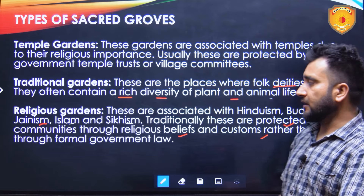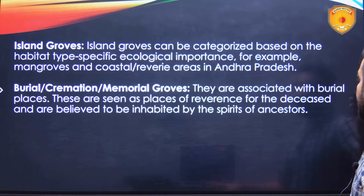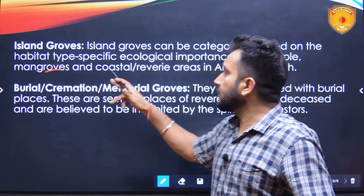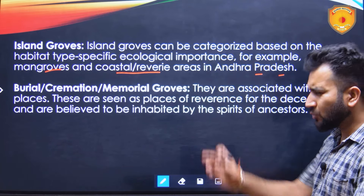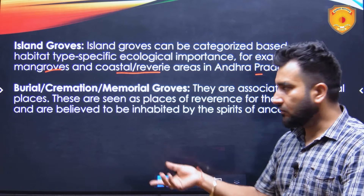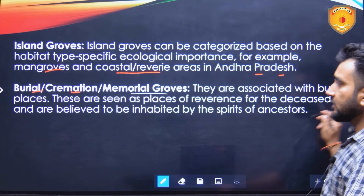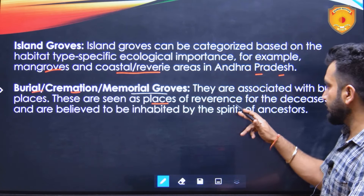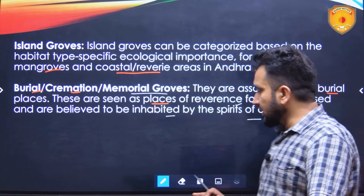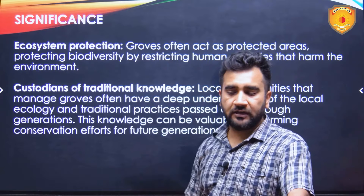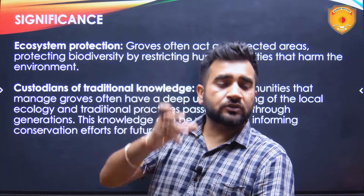Religious gardens are associated with Hinduism, Buddhism, Jainism, Islam, and Sikhism. Traditionally, these are protected by local communities through religious beliefs and customs rather than through formal government law. Island groves can be categorized based on habitat type, such as mangroves and coastal riverine areas in Andhra Pradesh with different types of forests on small islands. Burial, cremation, and memorial groves are associated with burial places, seen as places of reverence for the deceased, and are believed to be inhabited by the spirits of ancestors.